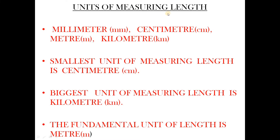Now we will learn the units of measuring length. Millimeter — short form is mm. Centimeter — short form is cm. Meter — short form is m. Kilometer — short form is km. The smallest unit of measuring length is mm, and the biggest unit is km. The fundamental unit of length is meter.